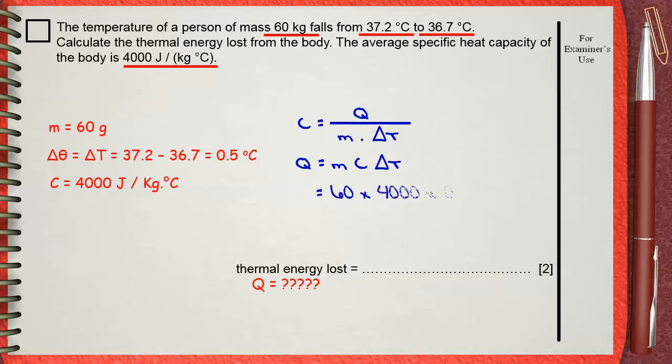M is 60, times C which is 4000, the specific heat capacity, times 0.5 which is delta T, the change in temperature. The amount of energy lost, Q, is 120,000 joules.